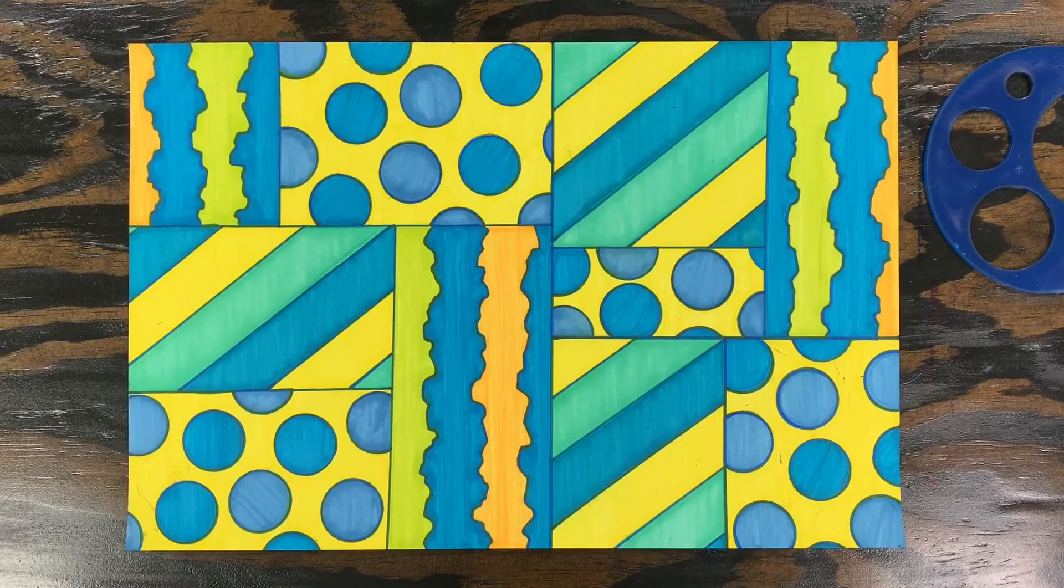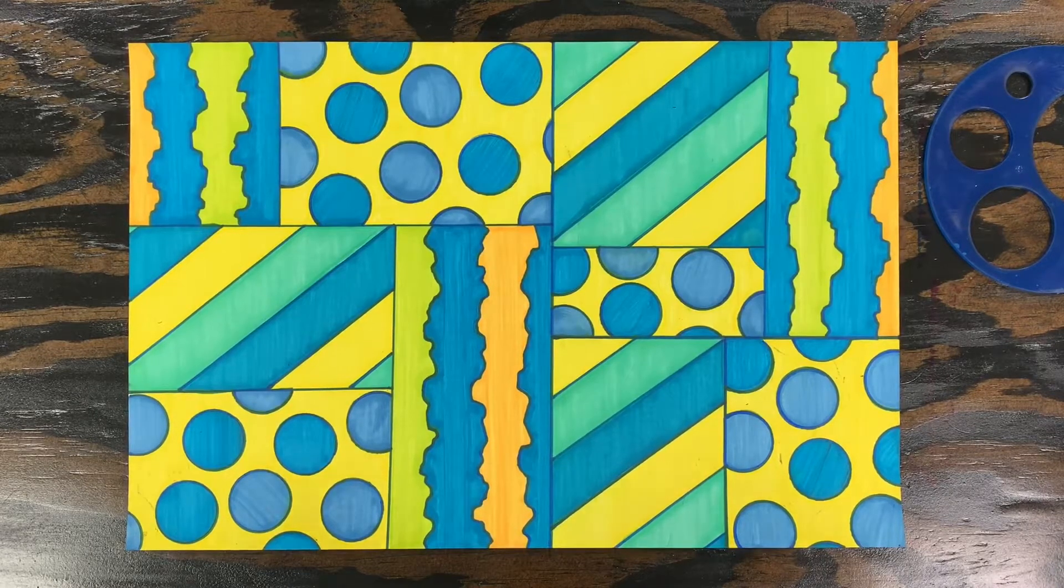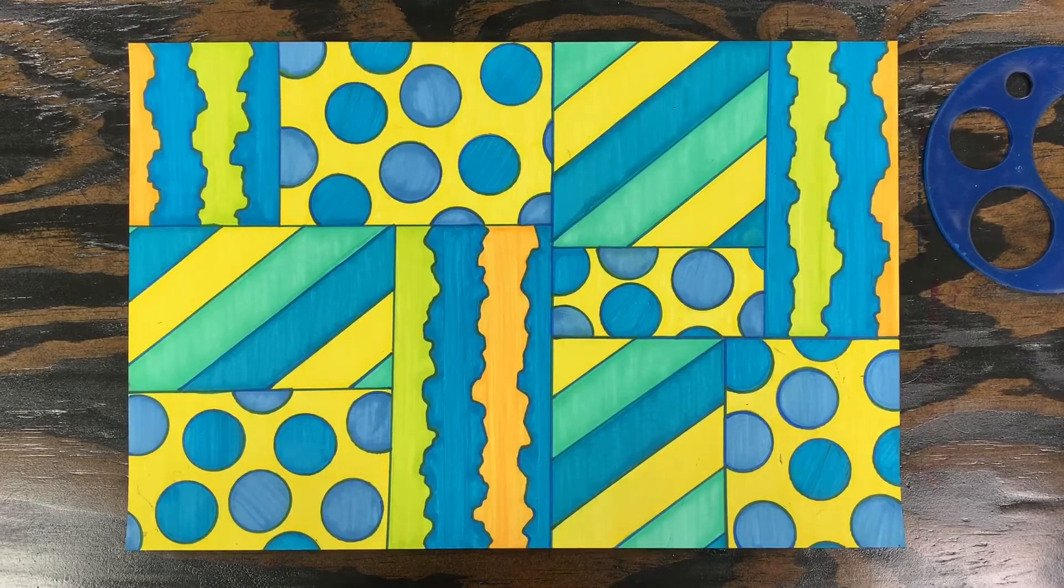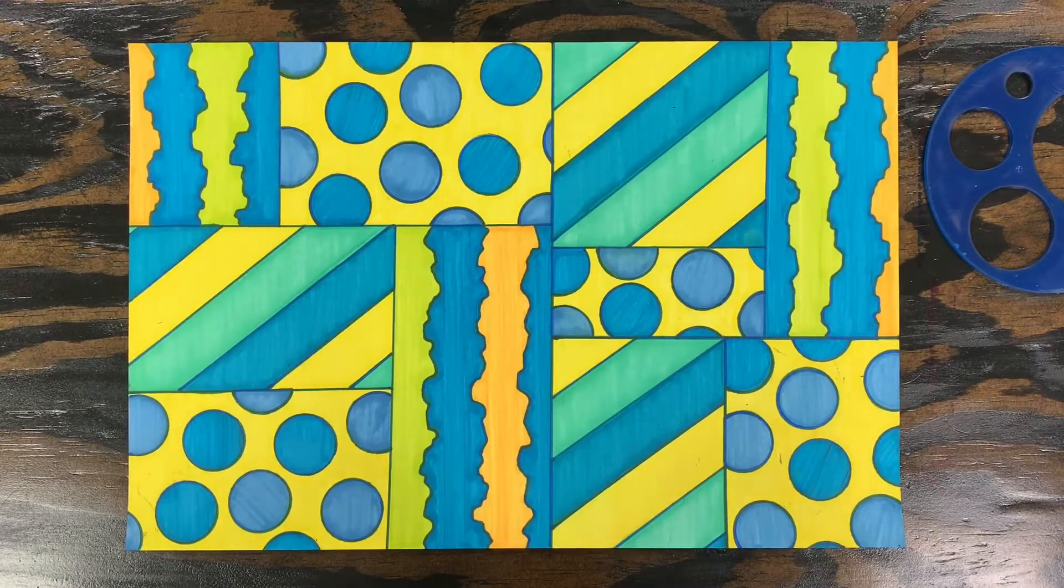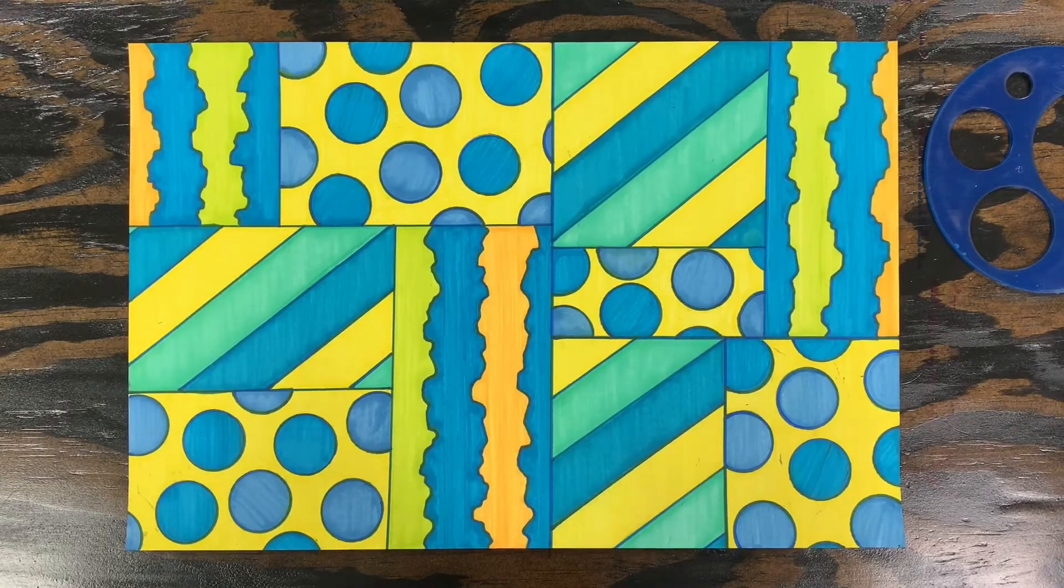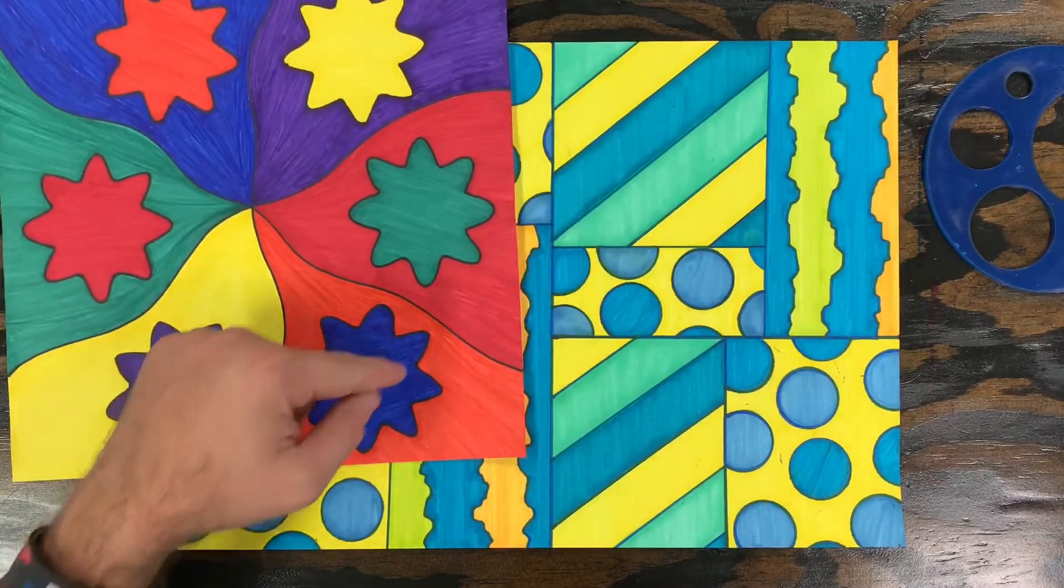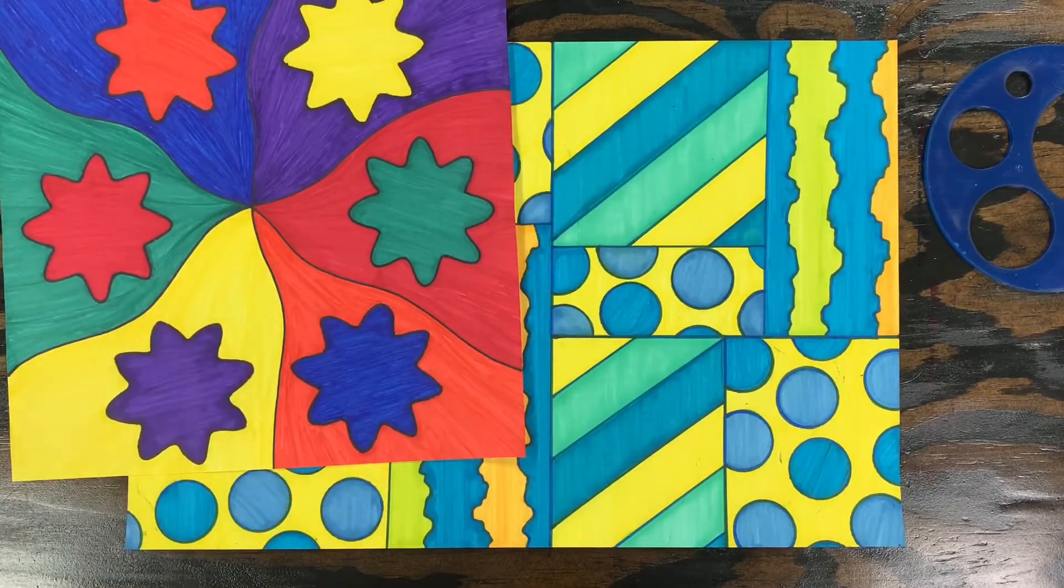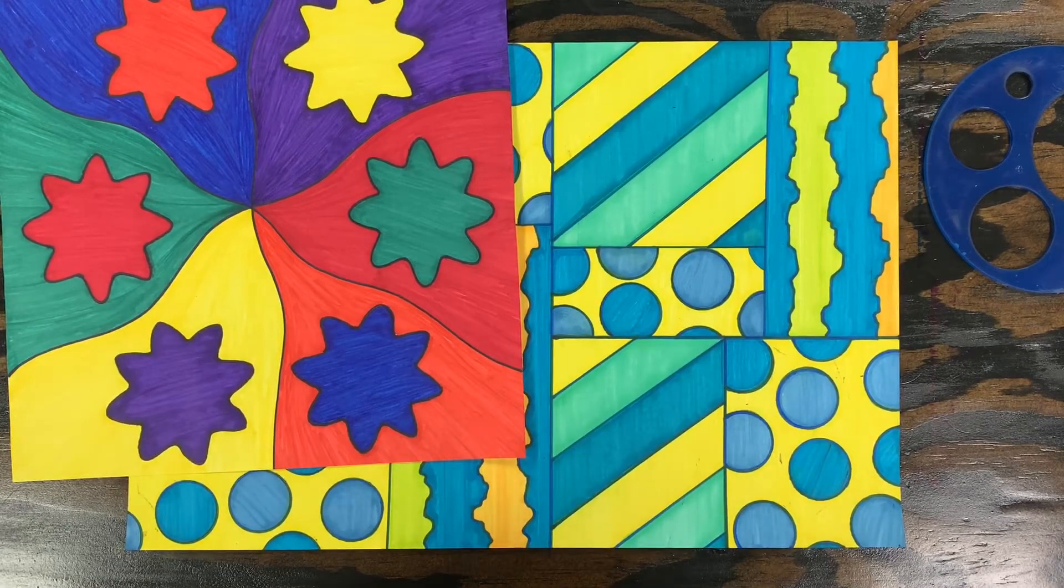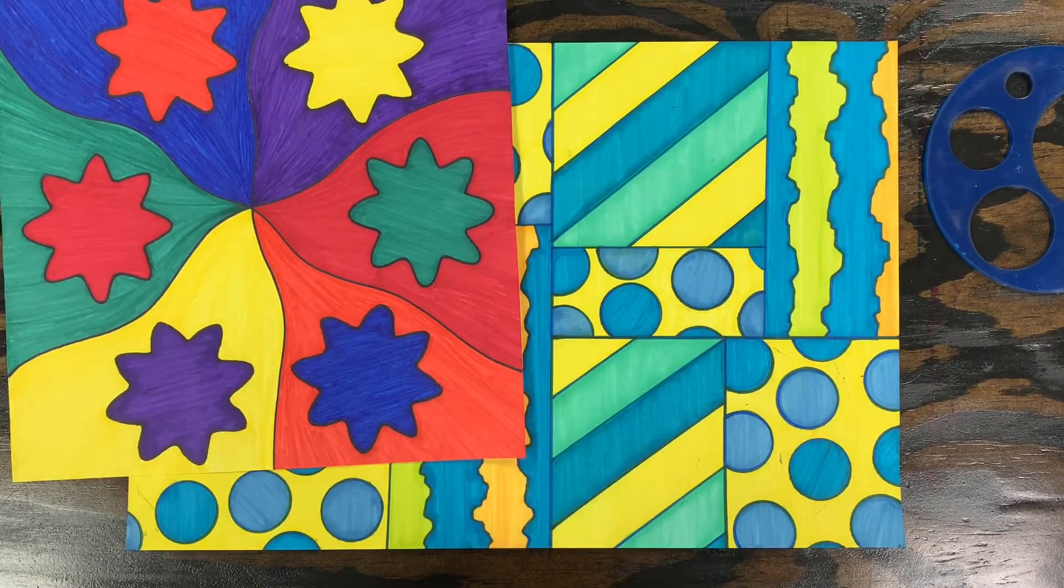Now that everything's colored, you can also see that I chose to use colors that are all within the yellow, green, blue area of the color wheel. That's called an analogous color scheme. An analogous color scheme is when you choose colors that are close together on the color wheel because they work together a little bit better than using random colors.